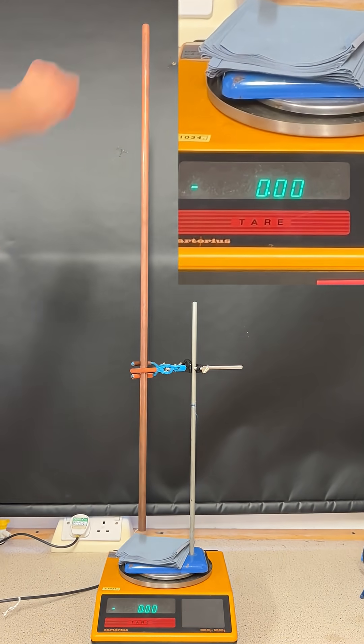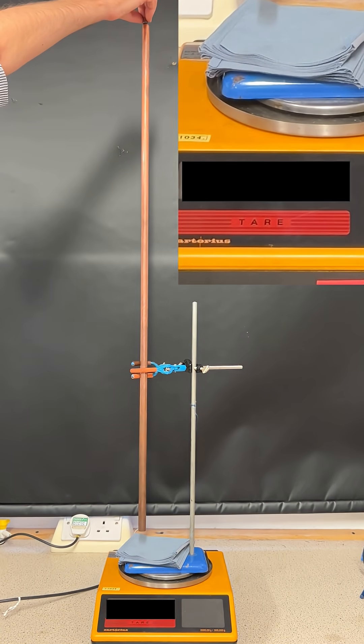But back to my original question, what do you think is going to happen to the balance reading when I drop the magnet through the copper pipe? Pause the video, make your prediction, and see if you can explain the reasoning for your prediction.